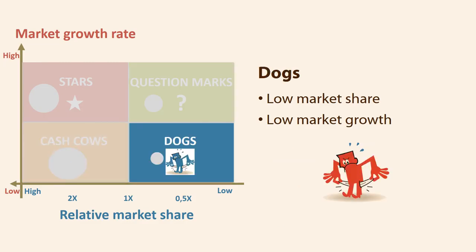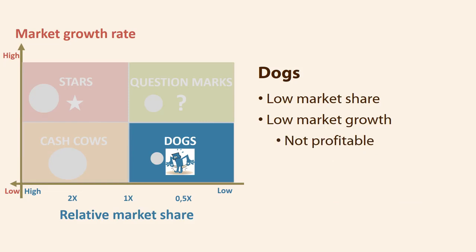A product in the dog field is in a market with low market growth and little relative market share. For example, it may be a cash cow that is no longer attractive to consumers. A dog is typically phased out of the portfolio as it is not profitable for the company — they are a drain on resources and cash. Examples are products like the Walkman or DVDs; the lifetime of products in the electronics industry is, in general, very short.